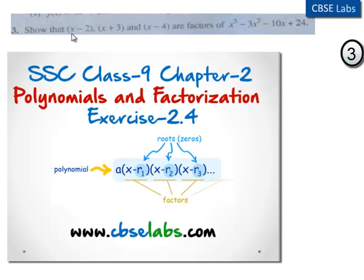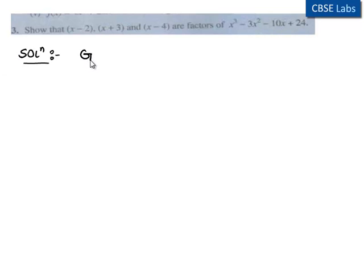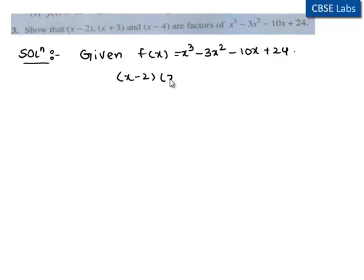Coming to the third problem: show that x minus 2, x plus 3, and x minus 4 are factors of the polynomial x cubed minus 3x squared minus 10x plus 24. Coming to the solution, the given polynomial is f(x) = x³ - 3x² - 10x + 24, and the given linear polynomials are x minus 2, x plus 3, and x minus 4.